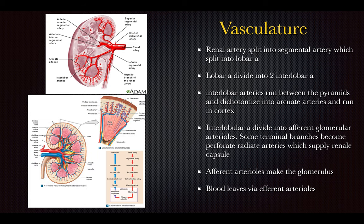The kidneys are supplied by the renal arteries, which split into lobar arteries, then into interlobar arteries. The interlobar arteries run between the pyramids and split into arcuate arteries, which arc over the pyramids and run in the cortex. These are blind-ended arteries.